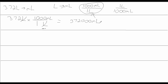This number should feel okay. You have to sense that there are more milliliters in a given quantity than liters — so 372 liters gives a lot more milliliters. Converting 372,000 to scientific notation: 3.72 times 10 to the 5th milliliters.